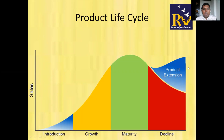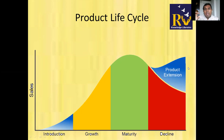Now let us understand the Product Life Cycle. I will not talk much about it from a pure marketing perspective, but I will touch upon it briefly and focus more on the application from a faculty's perspective. There are four stages: Introduction, Growth, Maturity, and Decline. Every product will go through this cycle. Sometimes the time span of each phase will be reduced.